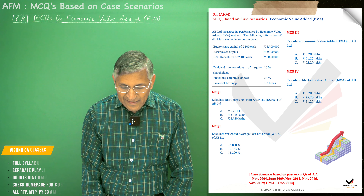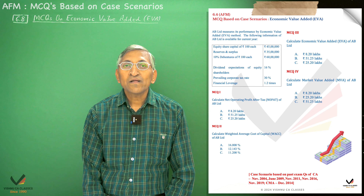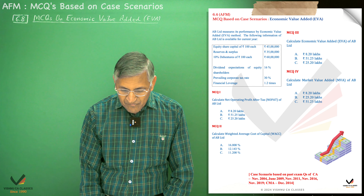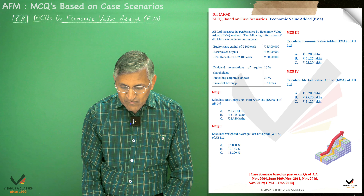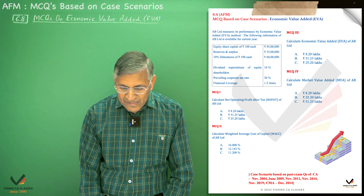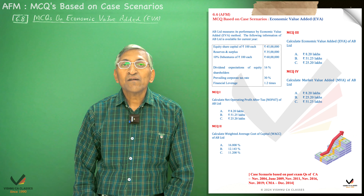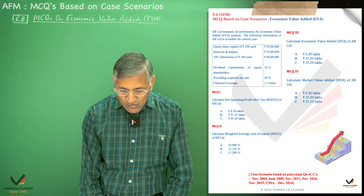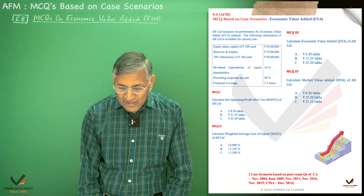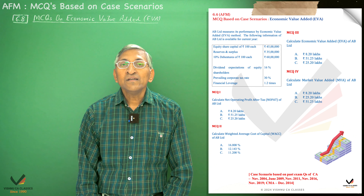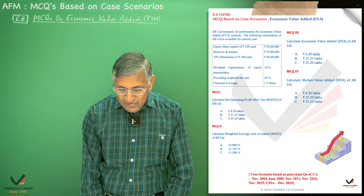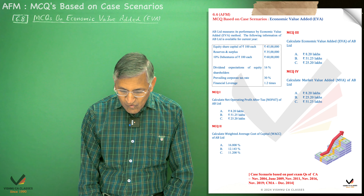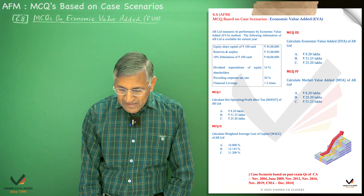We have to calculate: number one, the net operating profit after tax of AB Limited; second, the weighted average cost of capital of AB Limited; third, the economic value added of AB Limited; and fourth, the market value added of AB Limited.